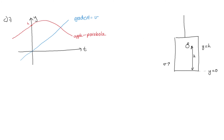Part two asks us to write an equation for the position of the floor of the lift corresponding to the graph. We've got y equals vt. I should check this corresponds with y equals 0 at t equals 0, which we can see it does.